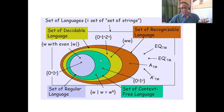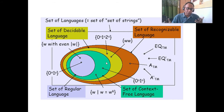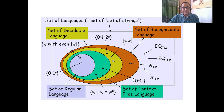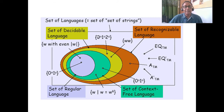Beyond that, non-deterministic context-free languages like palindrome are very difficult for programming purposes, but very interesting. Next is context-sensitive grammar. Here the example is A to the power N, B to the power N, C to the power N — like 0 to the power N, 1 to the power N, 2 to the power N, or WW.